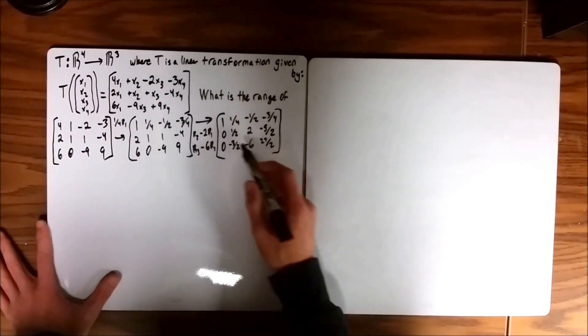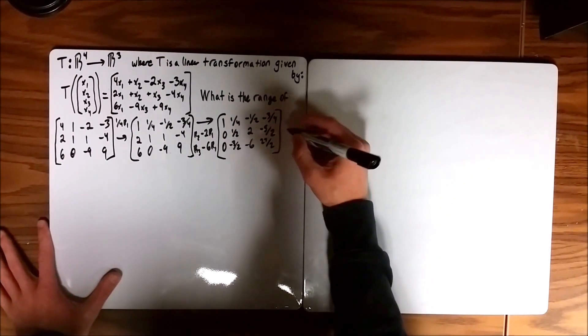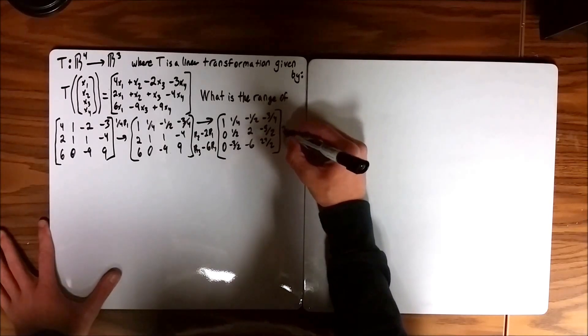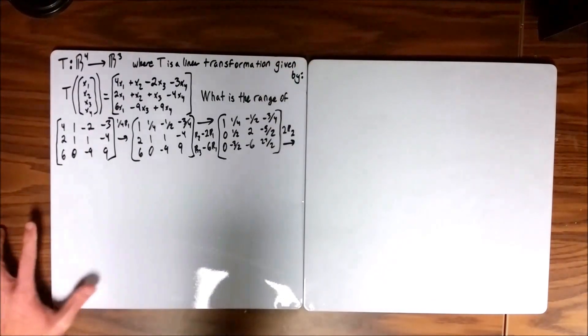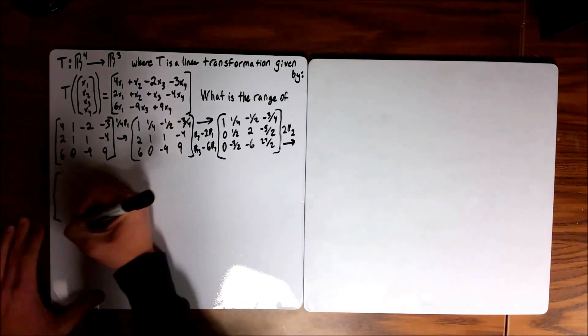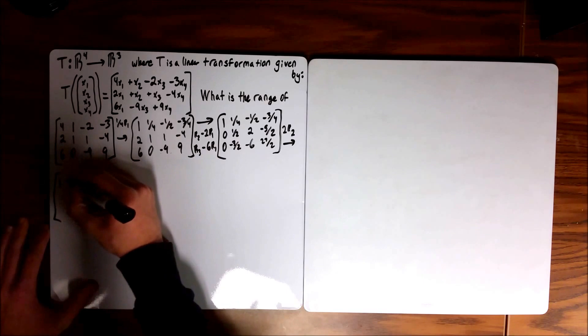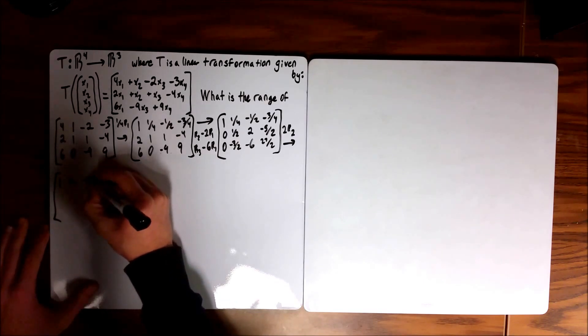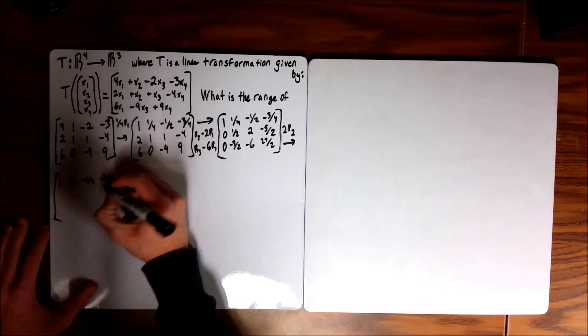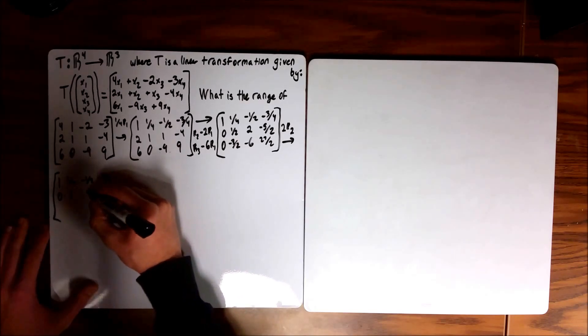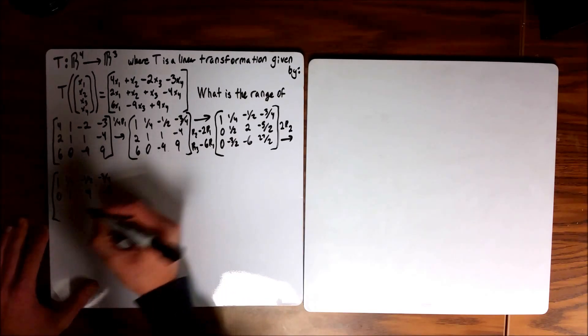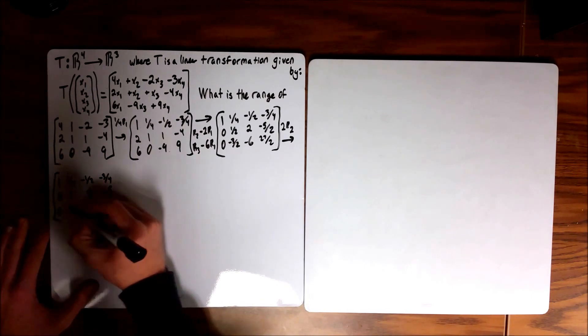And now we need to get a leading one in this column. So we're going to multiply row 2 by 2, take this down to the next row. You're going to keep the first column the same, 0, 0, 1, 4, negative 5. Third column stays the same with this operation.